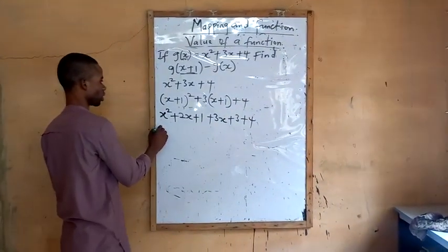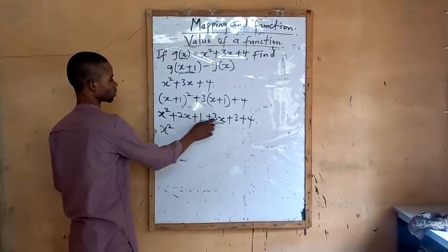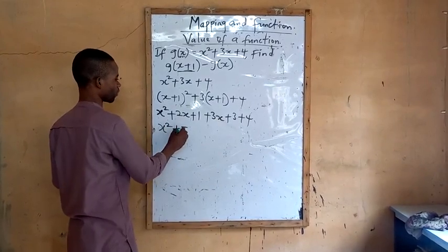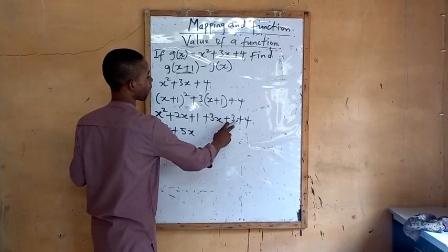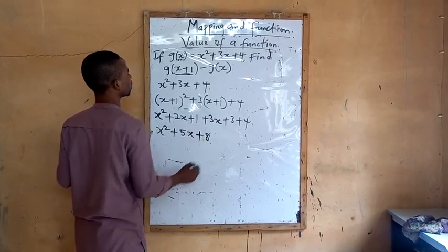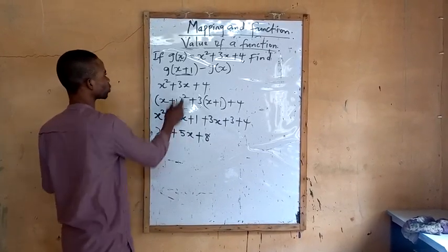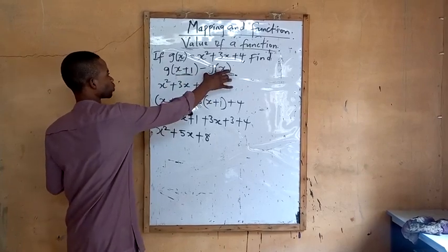So that means x squared plus 2x plus 3x, that's 5x, plus 1 plus 3 plus 4 plus 8. So now, for this one, don't forget we have this one also.